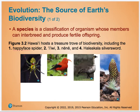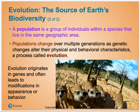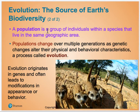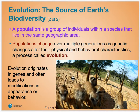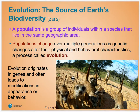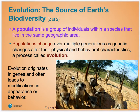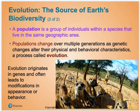A species is specifically an organism that can interbreed with other ones of the same species, and their offspring can also reproduce. Here are some of the cool species that live in Hawaii — the happy face spider is really awesome. A species is grouped into a population, where there's a group of that species living together, and populations are grouped further into communities.